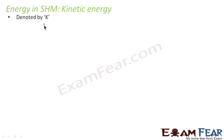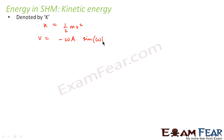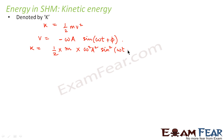Let us start with kinetic energy, denoted by a capital K. By definition, kinetic energy is half mv squared, where m is the mass of the particle and v is the velocity of the particle. For simple harmonic motion, we have already derived that velocity is equal to minus omega a sine(omega t + phi). Using this value of velocity, kinetic energy equals half m omega squared a squared sine squared(omega t + phi).